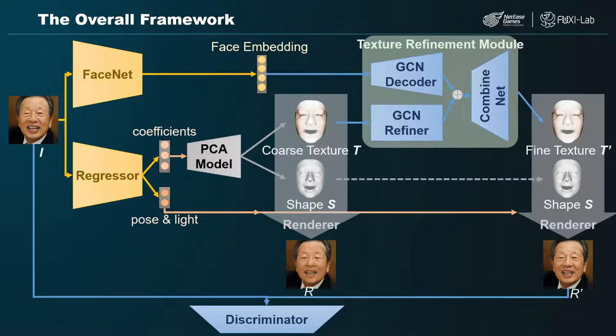The regressor regresses the 3DMM coefficients, face pose, and lighting parameters from the input image, where the 3DMM coefficients are used to compute the face shape and coarse texture through the PCA model.